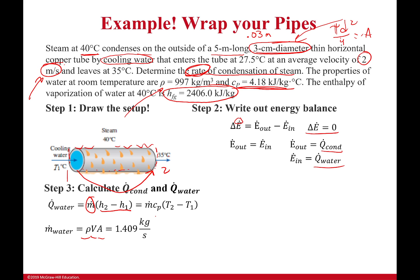This right here is the mass flow rate of my water. I have everything else. I can plug it in and get the change in enthalpy of my water over time, which comes out to be 44.17 kilowatts. I also know that would be equal to my condensation rate because they're the same value. E out is equal to E in.